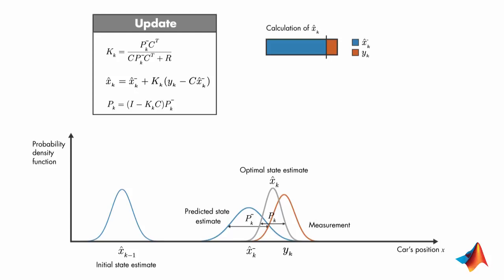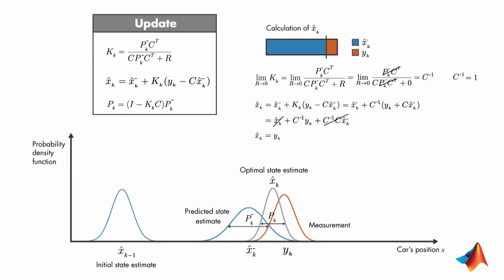We can also show this mathematically by looking at two extreme cases. Assume that, in the first case, the measurement covariance is zero. To calculate the Kalman gain, we take its limit as R goes to zero. We plug in zero for R and see that these two terms cancel each other out. As R goes to zero, the Kalman gain approaches the inverse of C, which is equal to one in our system. Plugging K and inverse of C into the a posteriori state estimate shows that x-hat k is equal to y_k. So the calculation comes from the measurement only, as expected.